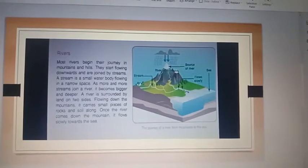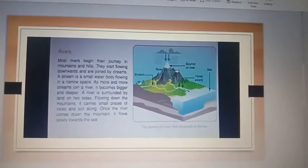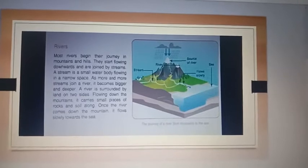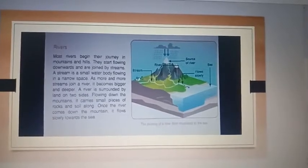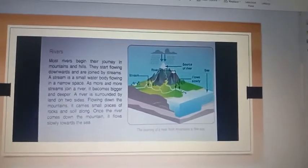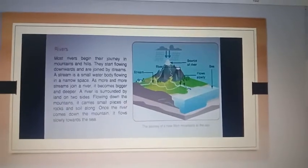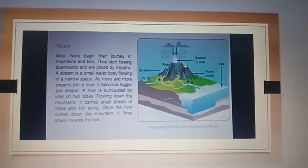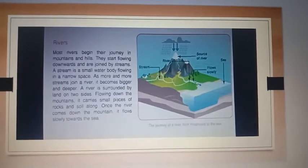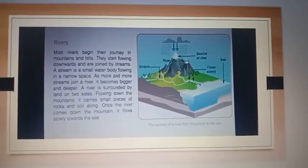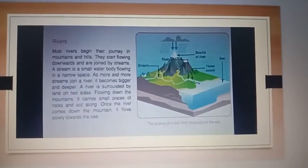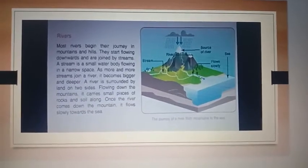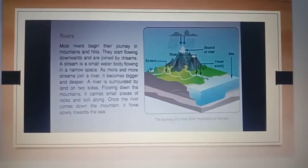Most rivers begin their journey in mountains and hills. They start flowing downwards and are joined by streams. A stream is a small water body flowing in a narrow space. As more and more streams join a river, it becomes bigger and deeper.